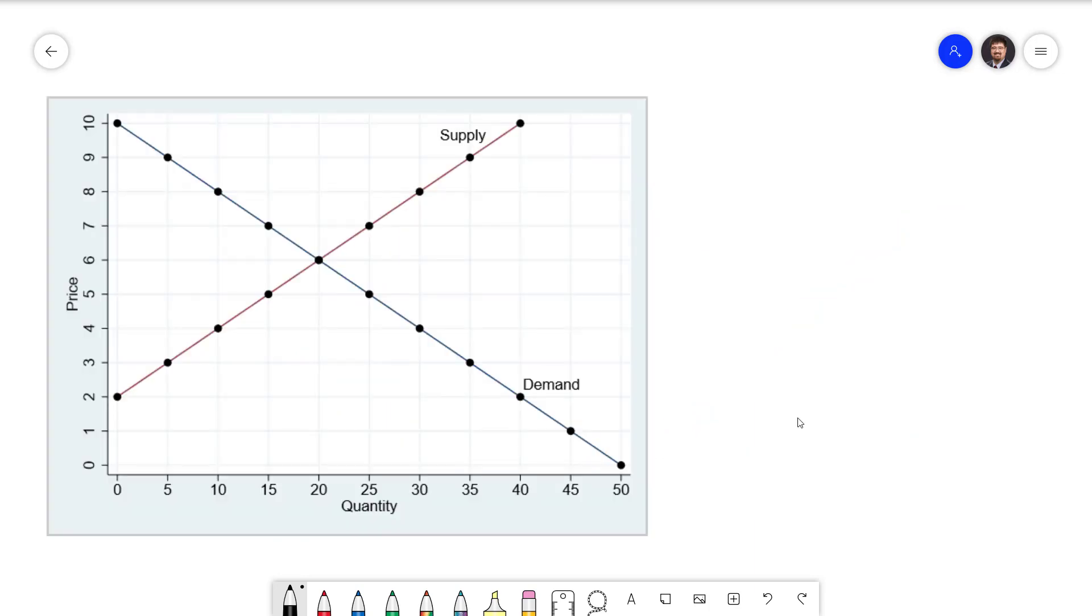We are now going to look at price floors. Price floors are a minimum legal price for a good. Returning to our example, suppose we have a price floor of 4. Again, I'm going to draw a horizontal line across for our price floor. Since a price floor is the minimum allowed price for a good and our equilibrium price is still 6, this is now going to be a non-binding price floor, since the price would not go below 4 anyway.